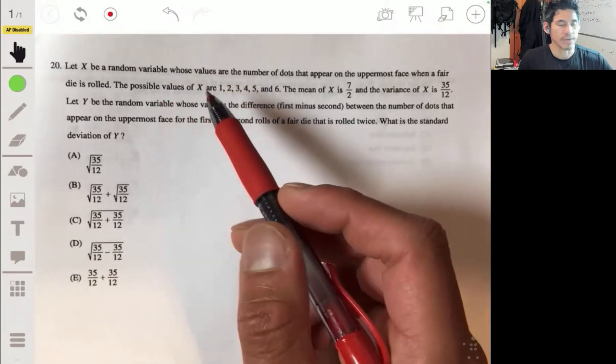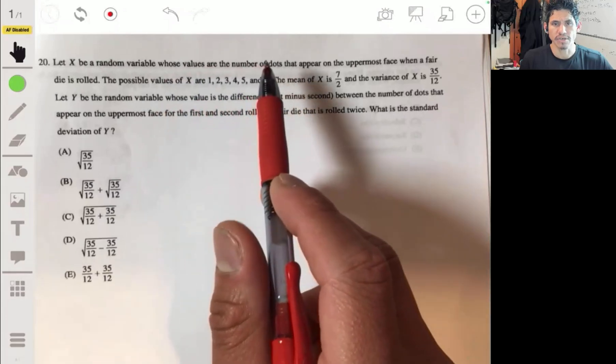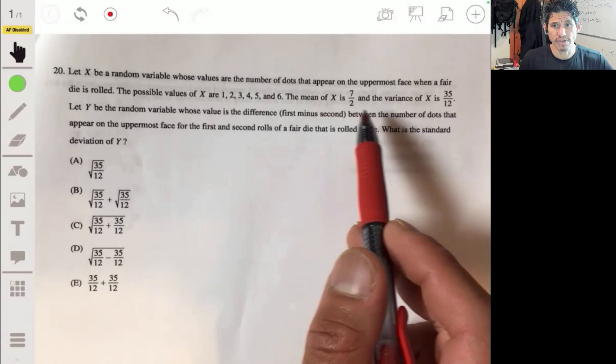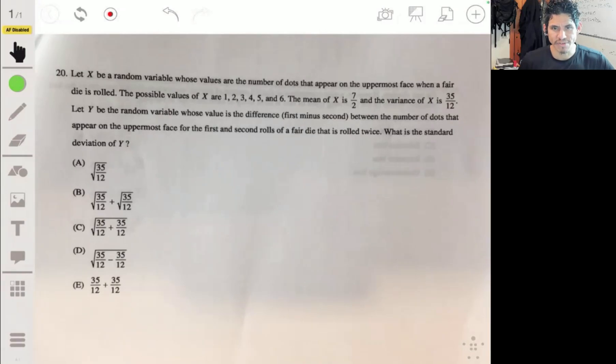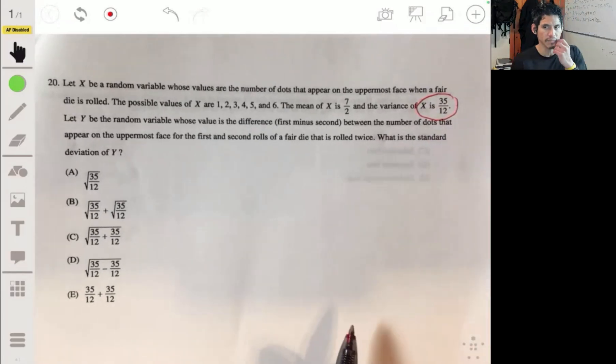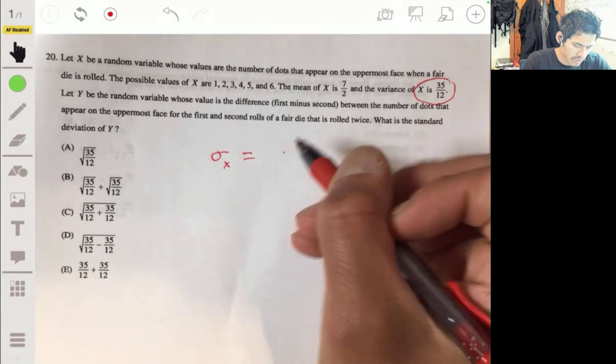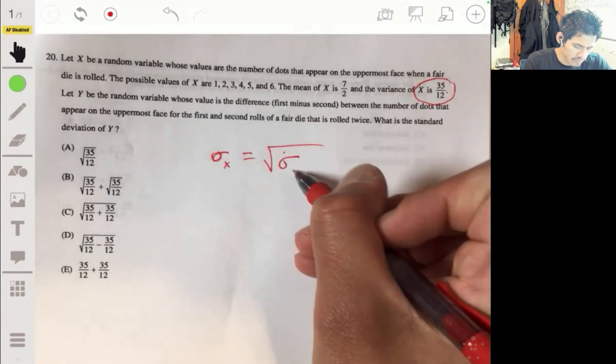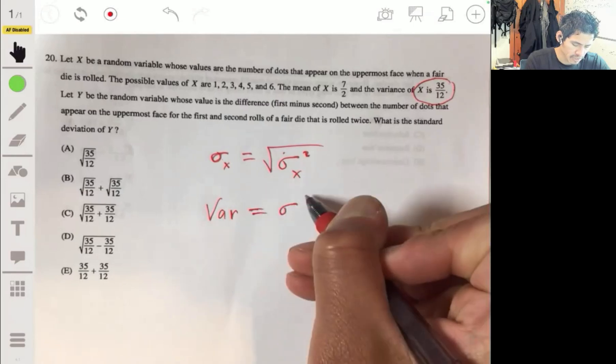Problem 20. Let X be a random variable whose values are the number of dots that appear on the uppermost face when a fair die is rolled. Possible values of X are 1, 2, 3, 4, 5, and 6. The mean of X is 7/2 and the variance of X is 35/12. Let Y be the random variable whose value is the difference, first minus second, between the number of dots that appear on the uppermost face for the first and second rolls when the fair die is rolled twice. What is the standard deviation of Y? So I guess they're just testing if you know this thing about the variance and standard deviation. A little bit of review. Remember the standard deviation of X is equal to the square root of the variance.